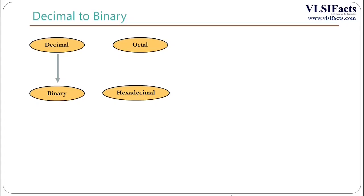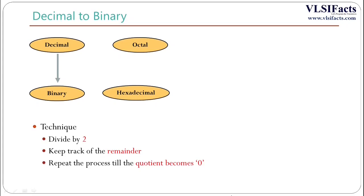Now we will discuss how to convert a decimal number to its binary form. The technique is: divide the number by 2 and keep track of the remainders. Repeat the process until the quotient becomes 0.